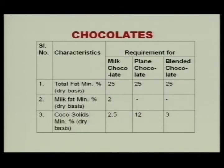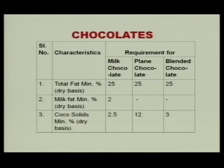Coming to chocolate confectionery: chocolate should be prepared from cocoa powder and be free from vegetable oil or fat. Total fat minimum on dry basis for milk chocolate, plain cocoa chocolate, and blended chocolate should all be 25%. Milk fat on dry basis for milk chocolate is 2%; for plain and blended chocolate no standard is specified. Cocoa solids minimum on dry basis: milk chocolate 2.5%, plain chocolate 12%, blended chocolate 3%.